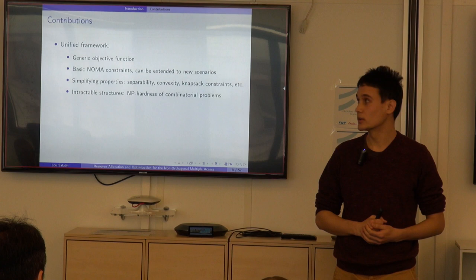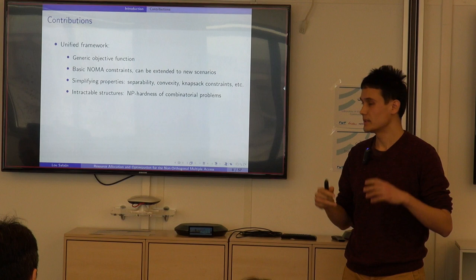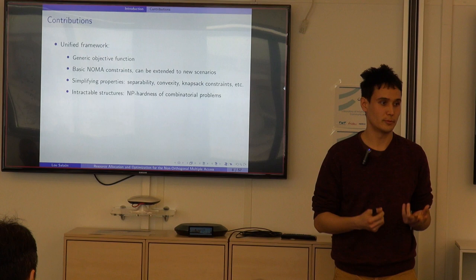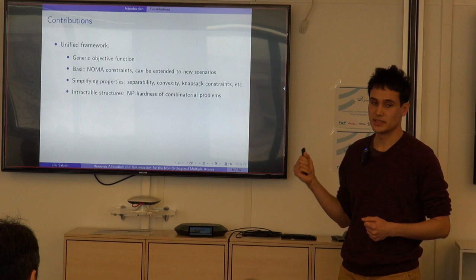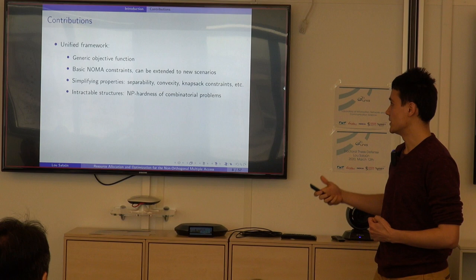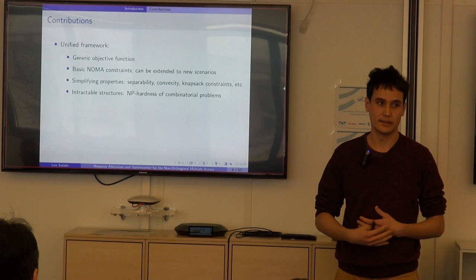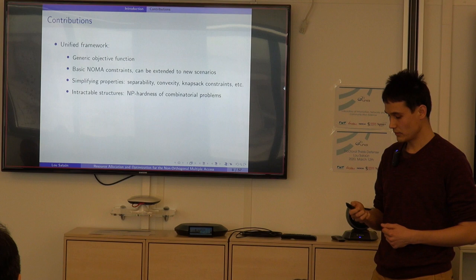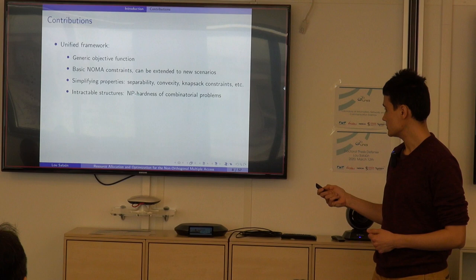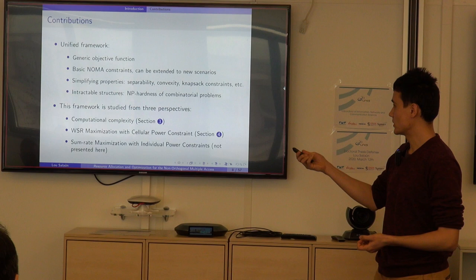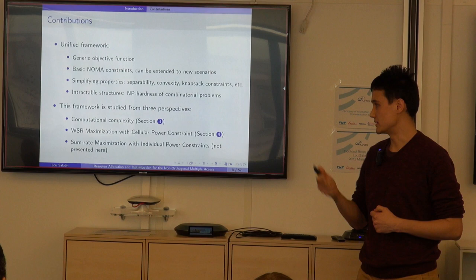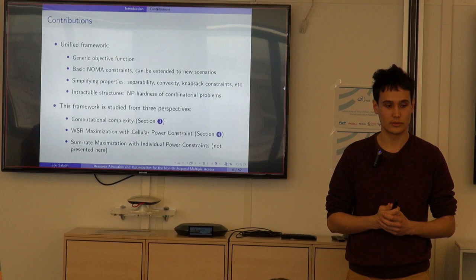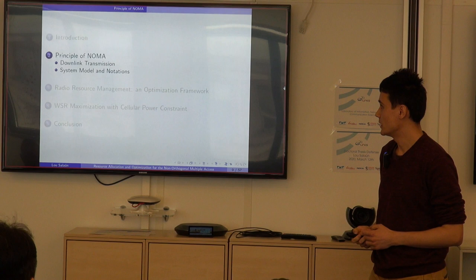In this work, we show a unified framework with a generic objective function covering most utilities in the literature. We define two sets of basic NOMA constraints used in all JSPA problems, which we believe can be extended to new scenarios. We study simplifying properties to help algorithm design, such as separability and convexity of the objective function. We also show intractable structures — namely the NP-hardness of combinatorial problems. We use this framework to study three problems: computational complexity in Section 3, weighted sum rate maximization with cellular power constraint in Section 4, and sum rate maximization with individual power constraint.